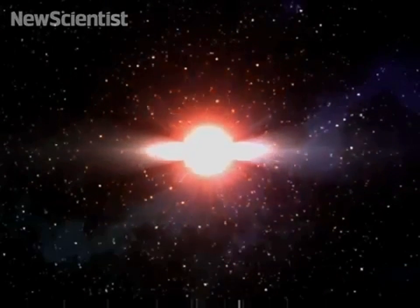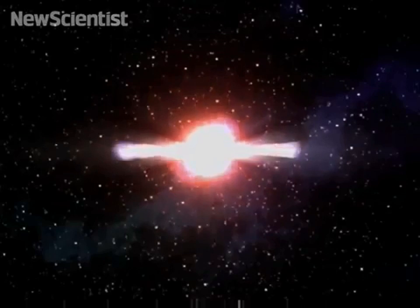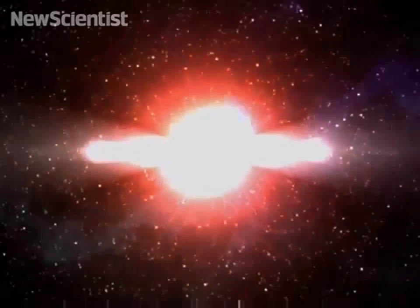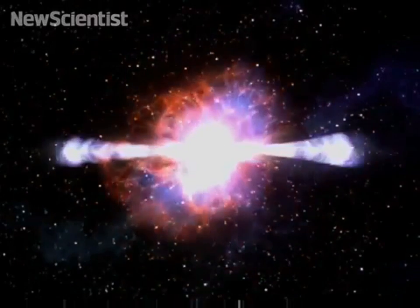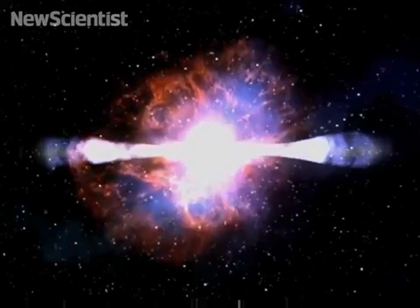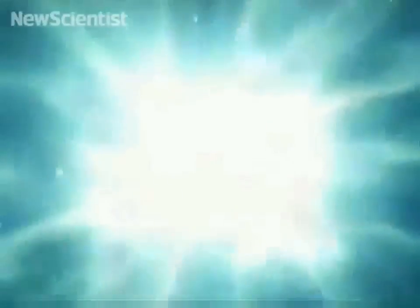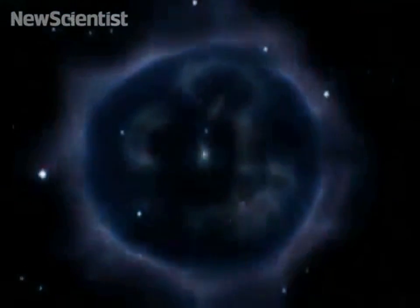A stellar mass black hole forms when a star more massive than about 25 suns runs out of nuclear fuel and dies. The star's core collapses under its own gravity and explodes as a supernova, leaving behind a compact black hole.